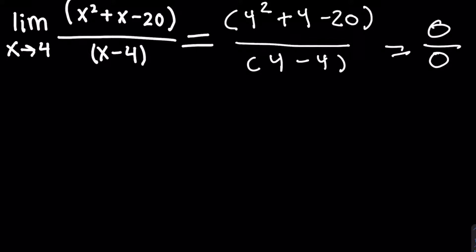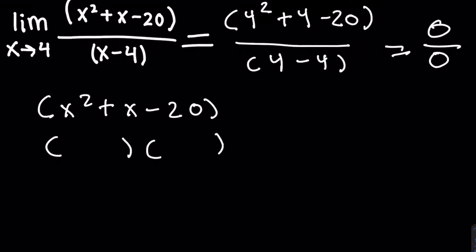We're going to have to factor or manipulate our function so we can plug in 4 and get an actual value. We're going to factor x squared plus x minus 20, since it's the only thing that can be factored. We need two numbers that multiply to minus 20 but add to 1, because we have 1 in front of the x. Those numbers are 5 and minus 4, since 5 plus minus 4 equals 1. So we get x plus 5 times x minus 4.